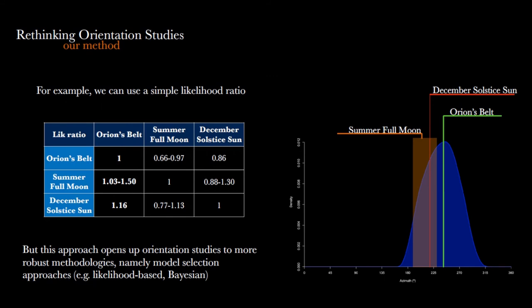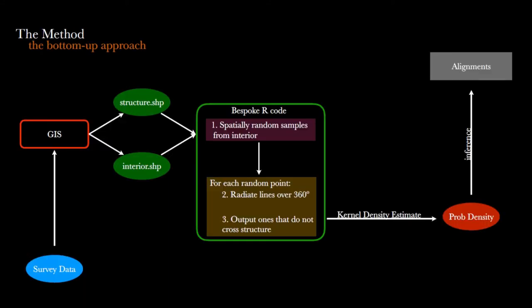But more importantly, with this probability distribution, we can actually use more robust statistical inference methods. I'm not going to go there because this is still work in progress, but I thought I should at least show you something. Here's a simple likelihood ratio between pairs of these three hypotheses, and you can actually see—as it's obvious to anyone by looking at this—that Orion's belt is the preferred model out of these three, I should say. But I think the challenge now is to actually employ some more robust model selection approaches like likelihood-based methods or Bayes, which everyone seems to be a fan of. Here's the flowchart of the method—we're basically combining building those shapefiles in GIS with some bespoke R code that does the stuff I explained before.